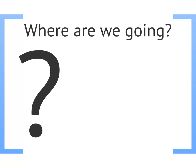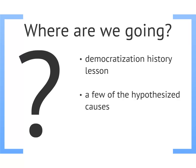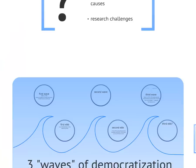Hello, and welcome to our lecture on democratization. As a quick overview, in today's lecture we're going to begin with a quick history lesson about democratization. Democracy has spread rapidly over the past 100 years, and we're going to look at three distinct waves of democratization. After that, we will briefly consider some of the independent variables that have been offered to explain democratization. Finally, we'll conclude by briefly thinking about the enormous research challenges facing those who wish to explain and predict democratization.